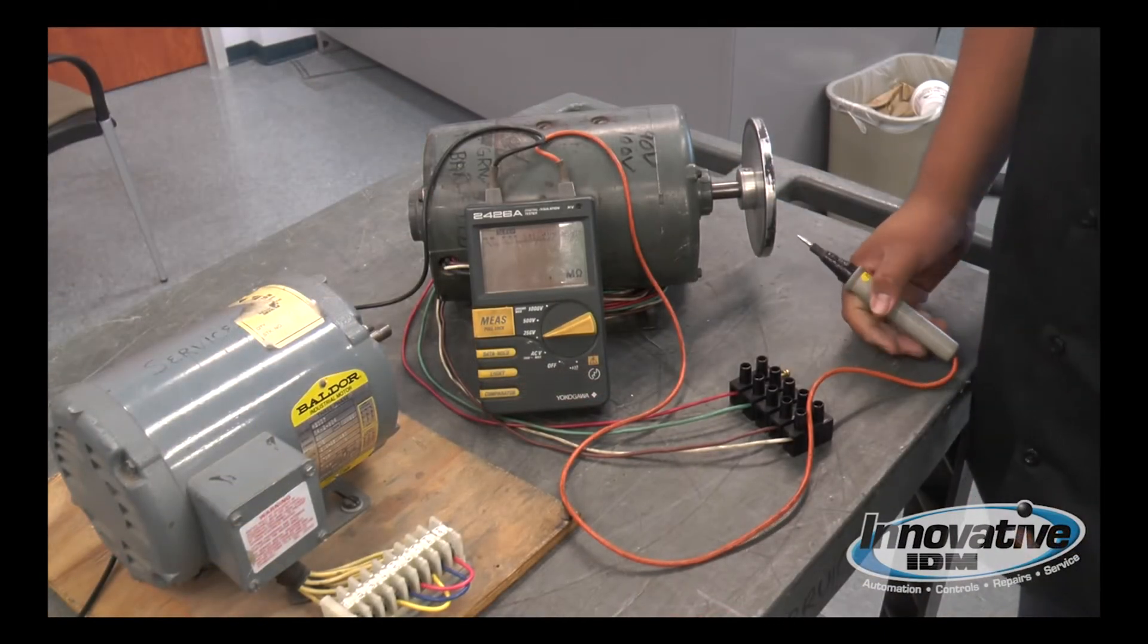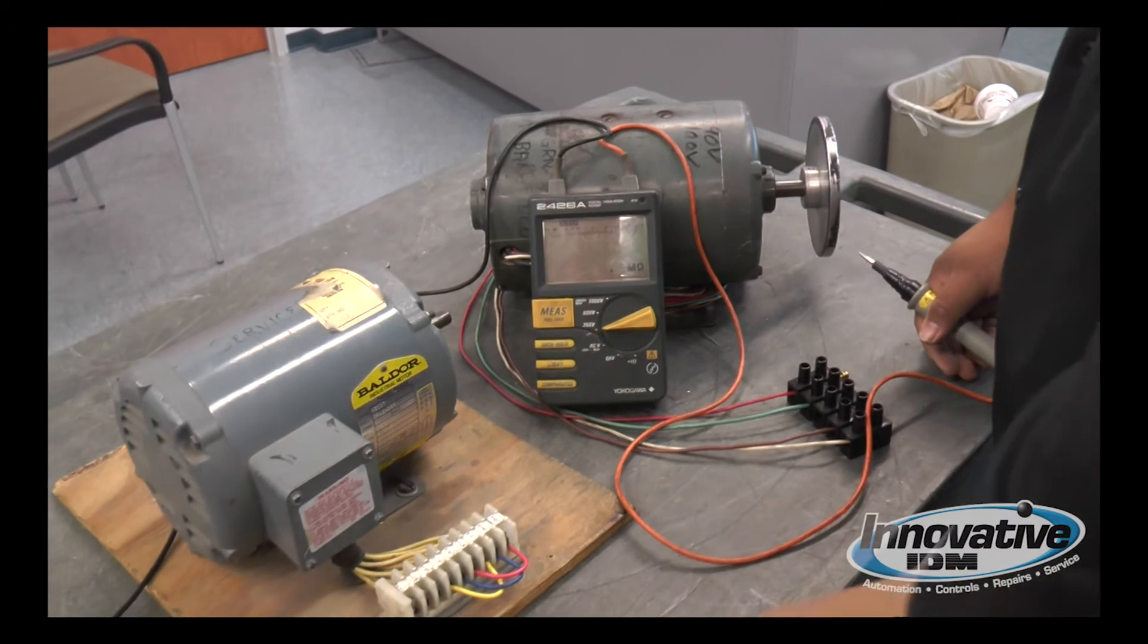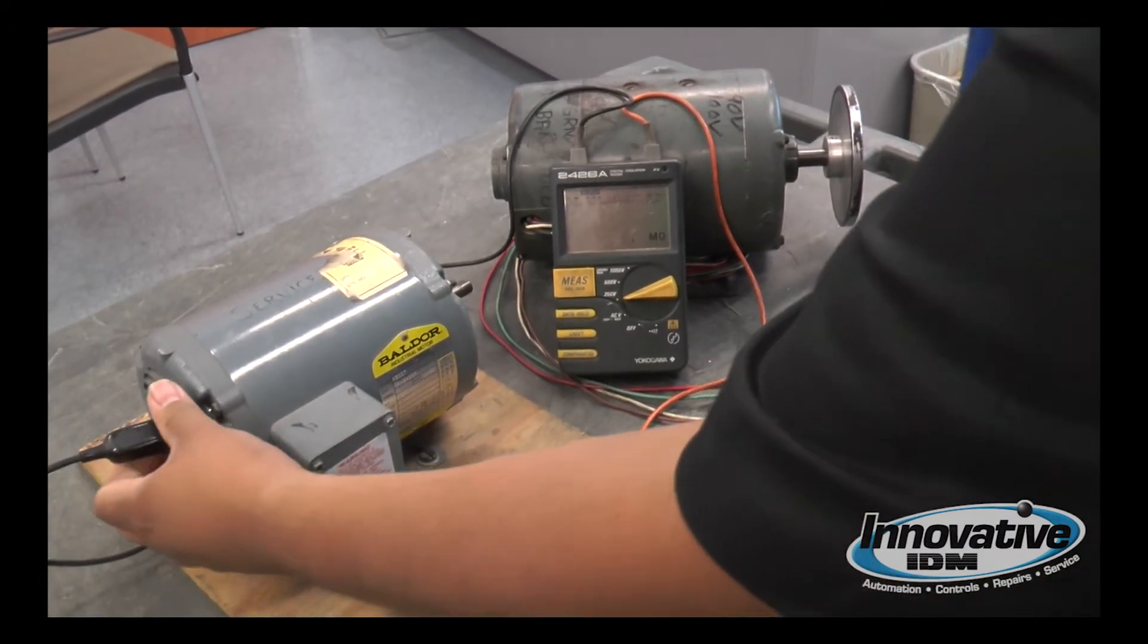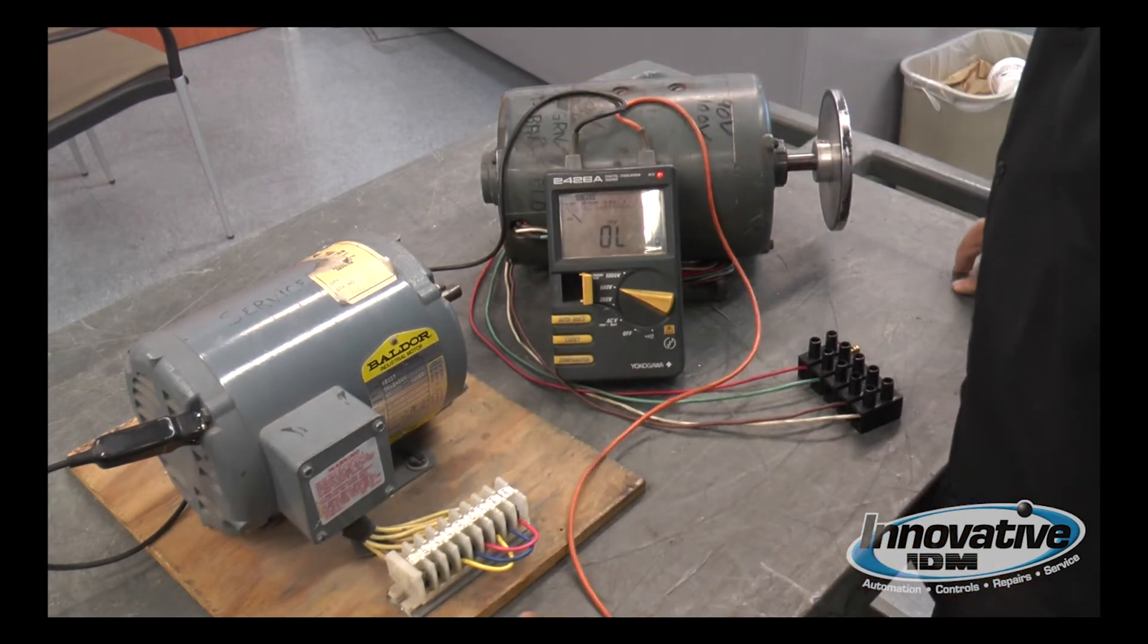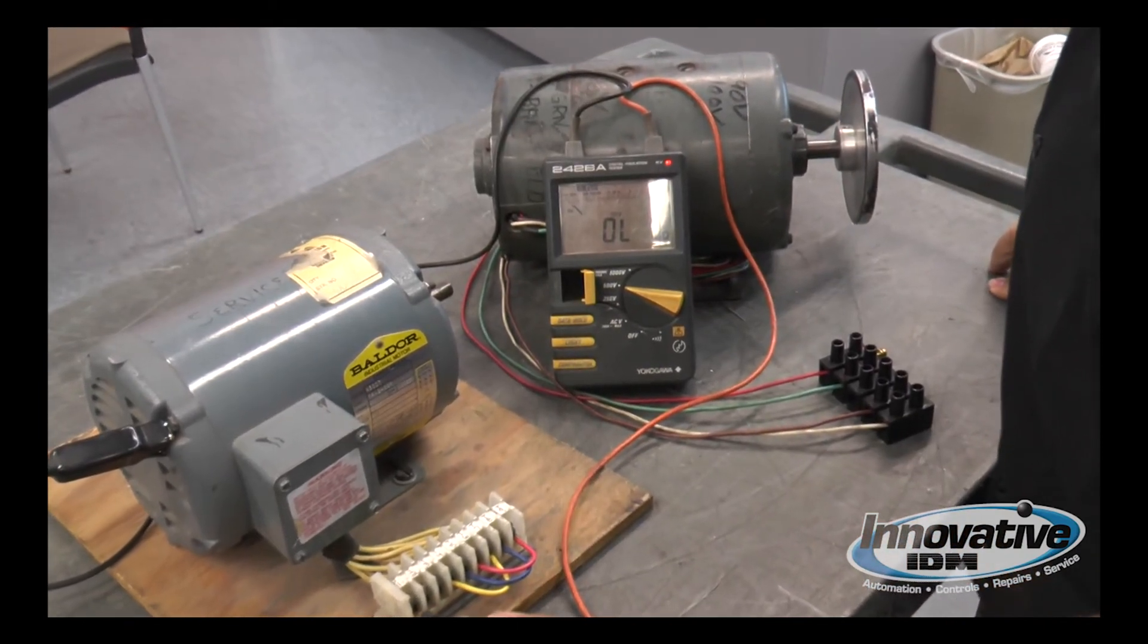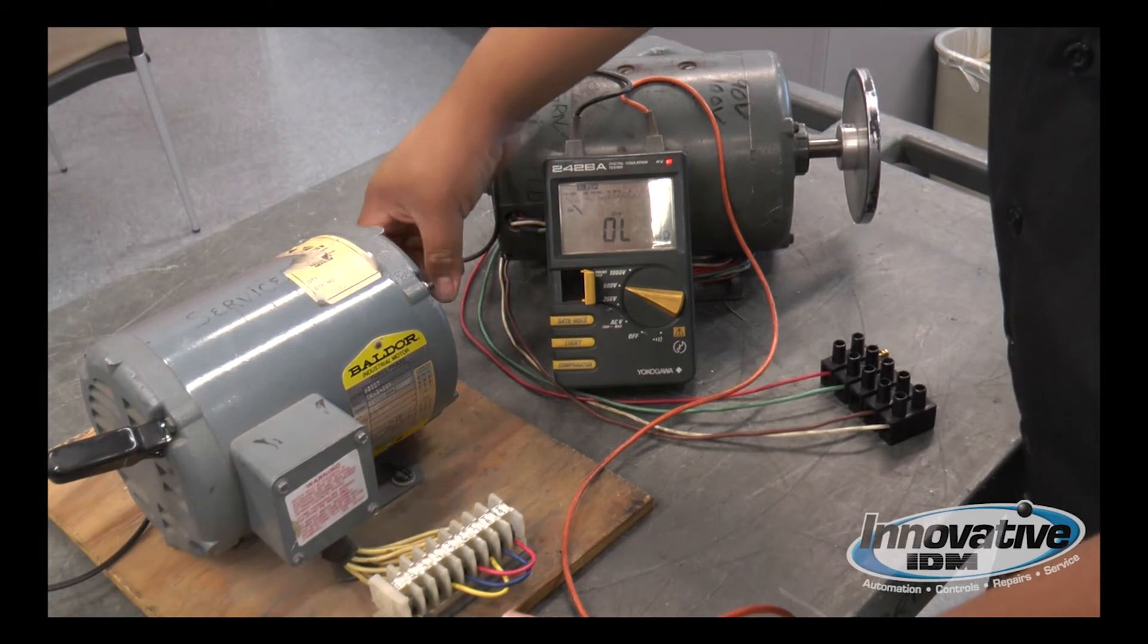Now I'm going to do an AC motor. First, we're going to connect the ground cable to the chassis of the motor. Turn on our meg meter and go from terminal one, two, and three. Terminal one will spin the motor.